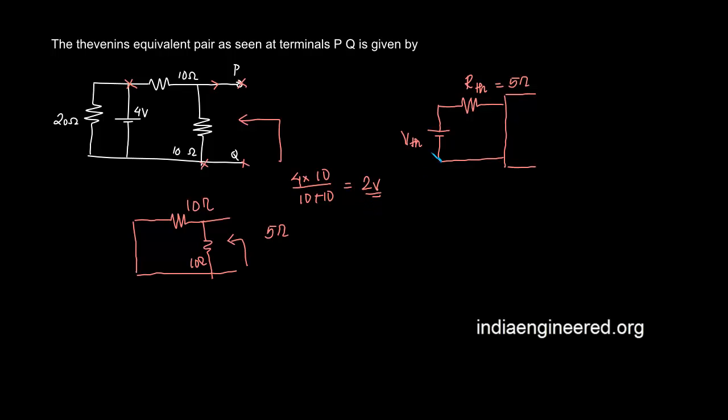That means we have found out V th is 2 volts. That means the Thevenin's voltage and resistance looking as seen at terminal P Q is 5 ohms and 2 volts.